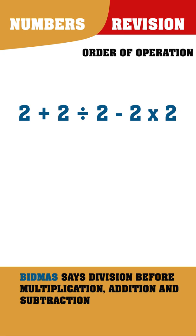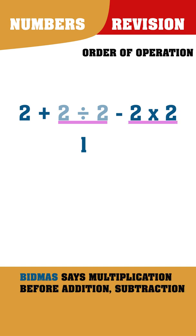Following BIDMAS, we must first divide. So, 2 divided by 2 equals 1. Then multiply, therefore 2 times 2 equals 4.